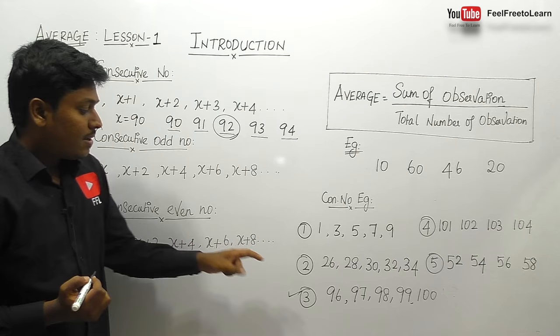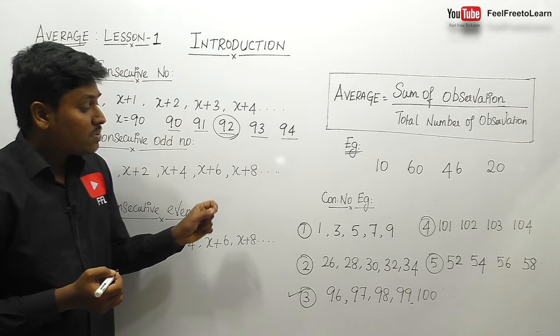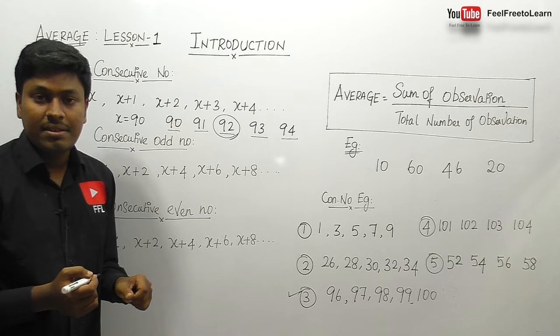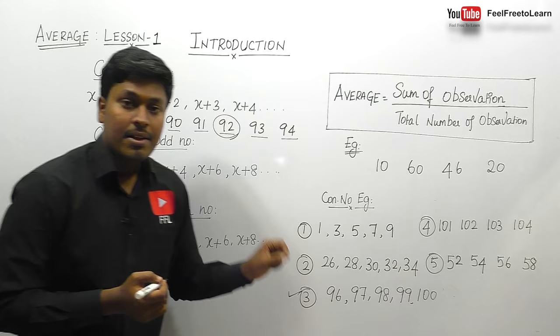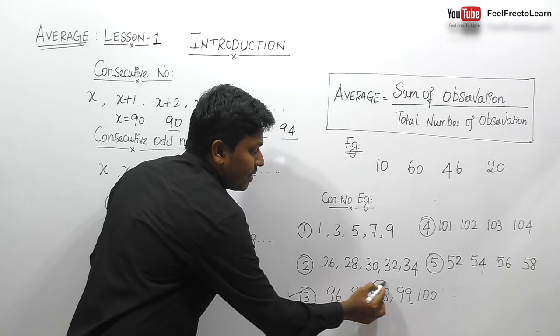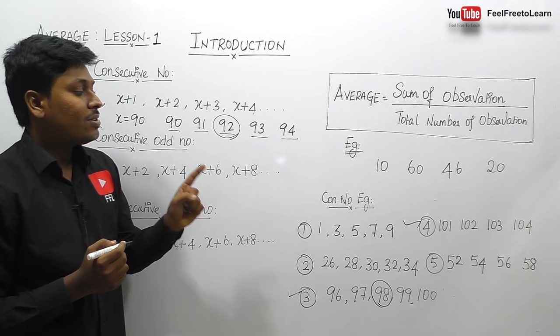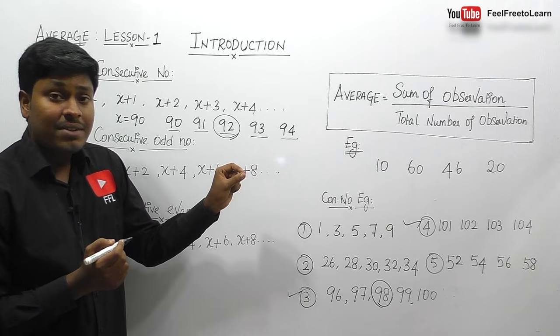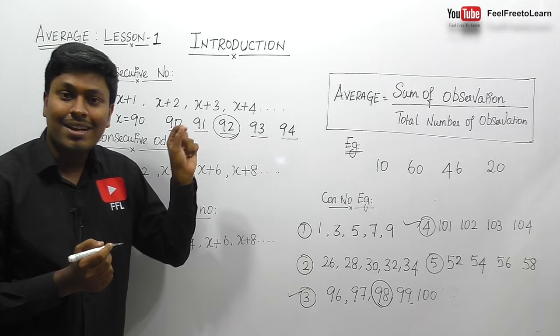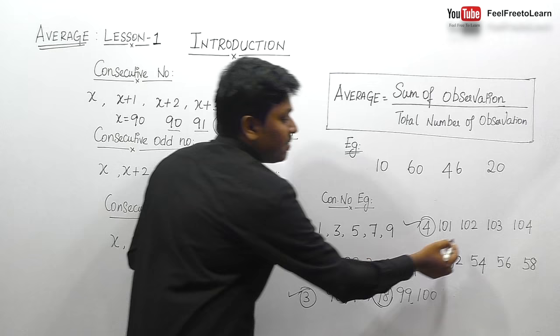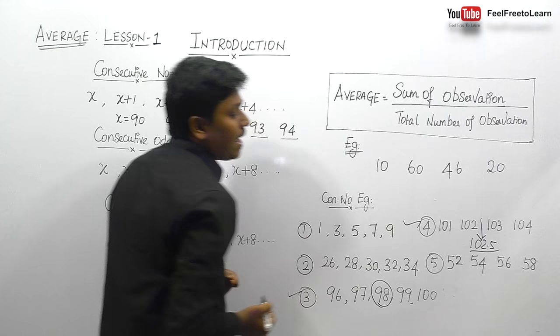For example question 3: 96, 97, 98, 99, 100. First, we check whether it is a consecutive number — it is. So the center number is the average, which is 98. For question number 4: 101, 102, 103, 104 — it is also a consecutive number. The center number is 102.5, so the average for question number 4 is 102.5.